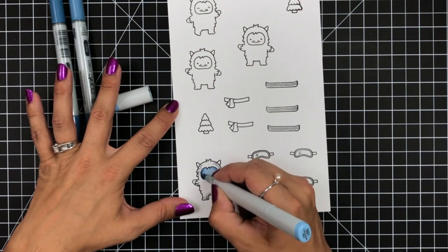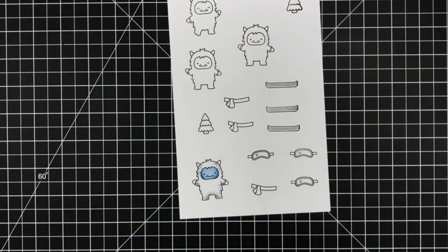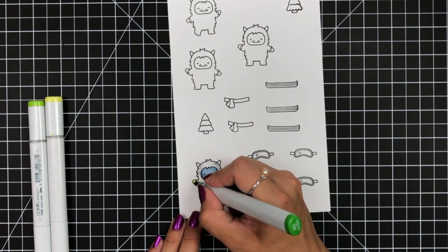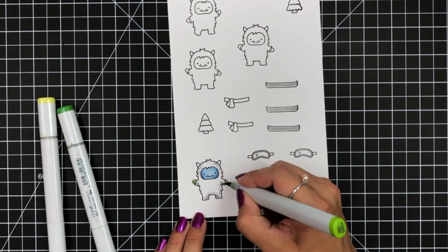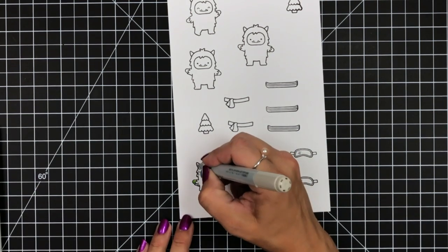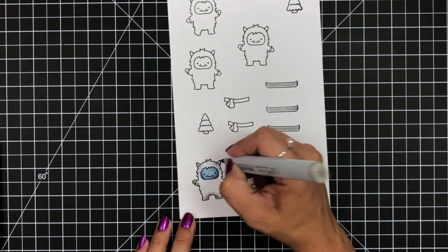For the colors, I used N5, N4 and N2. For the face, I used B97, B95 and B91.